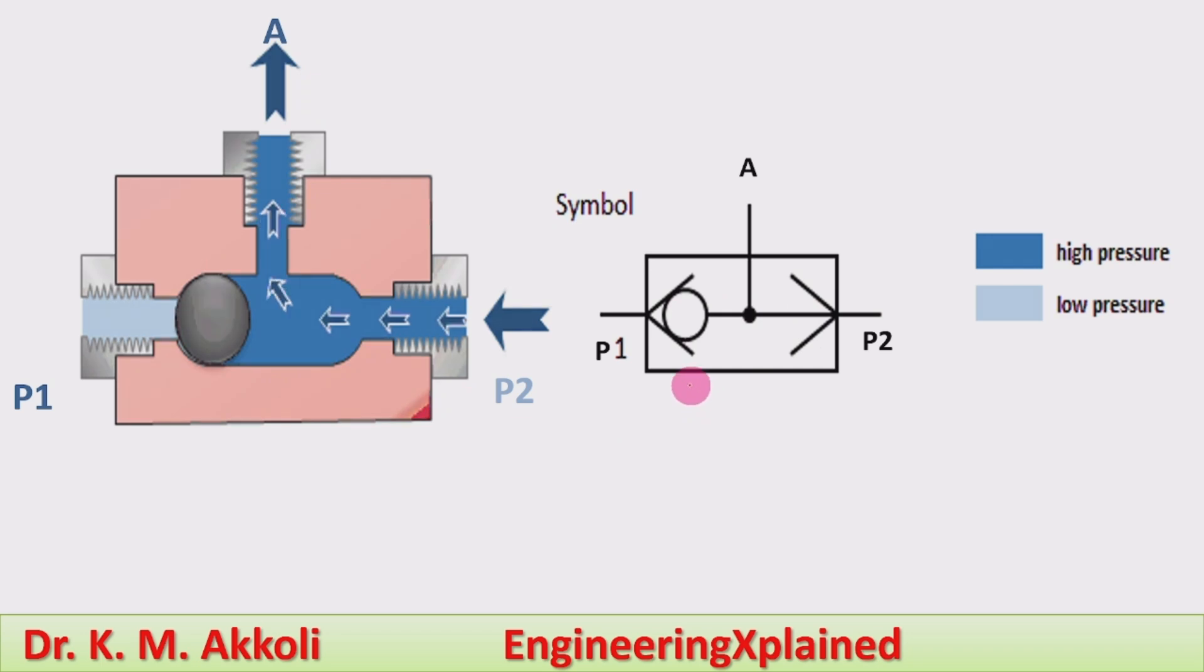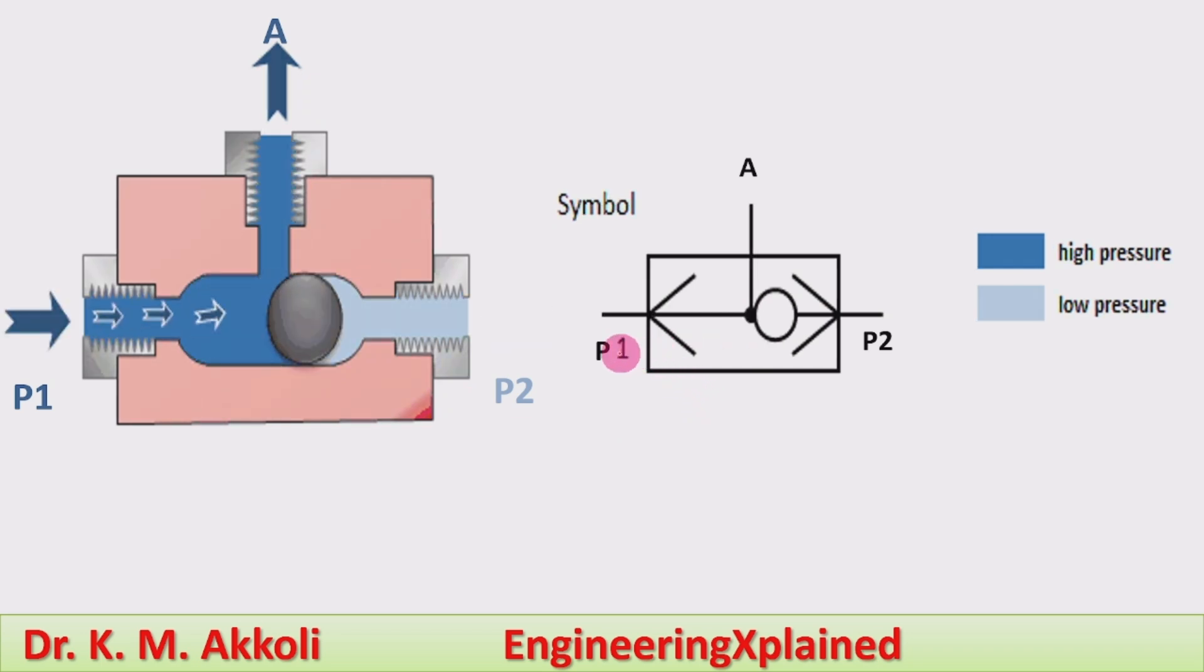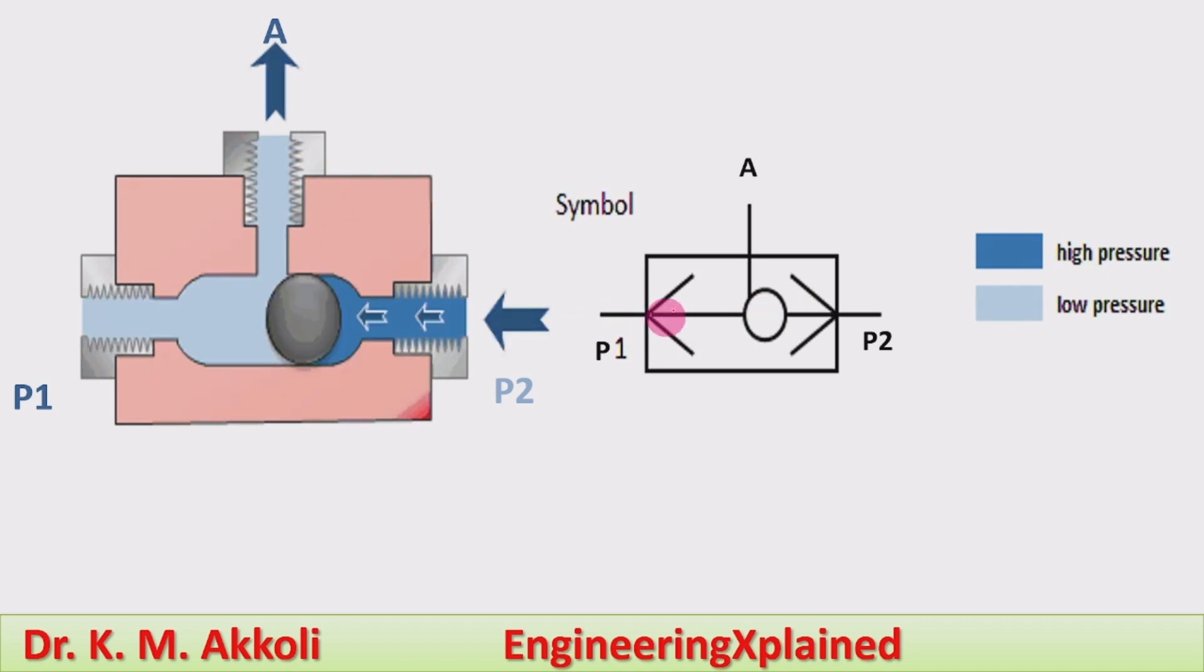And symbolically we can also represent here, when the P1 pressure is higher, this shuttle moves towards the right, that connects to the actuator.